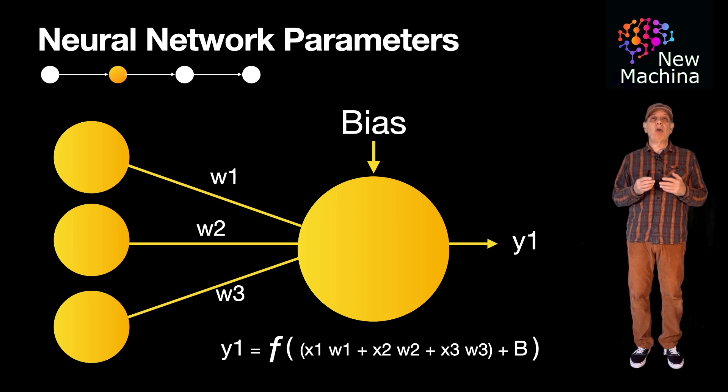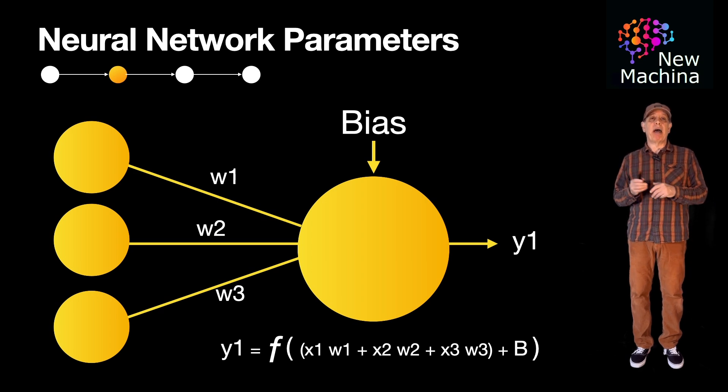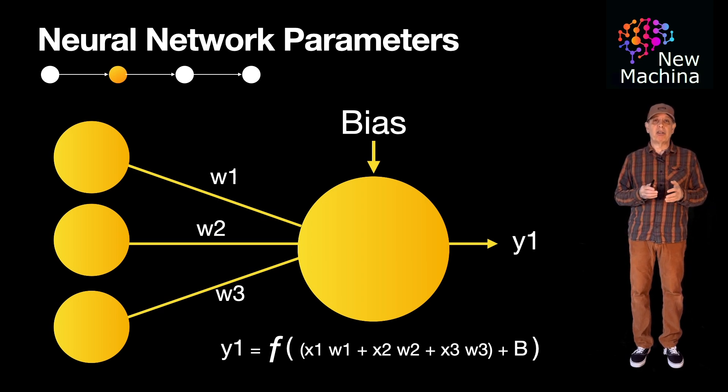Each neuron computes a weighted sum of all its inputs, adds a bias term, and applies an activation function. The bias helps the model shift the activation function, helping it fit the data better. The activation function determines whether a neuron activates, passing its signal to the next layer in the artificial neural network.